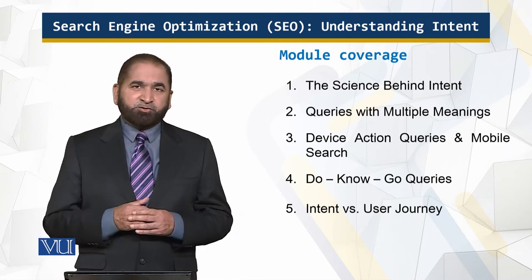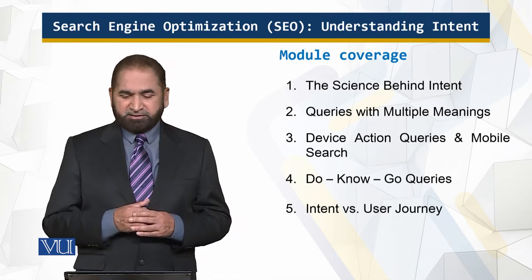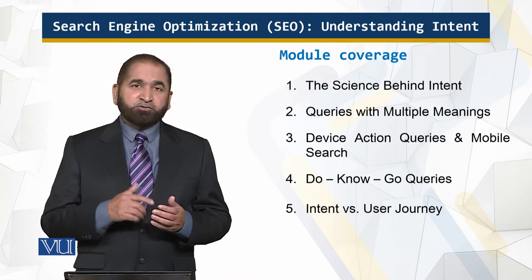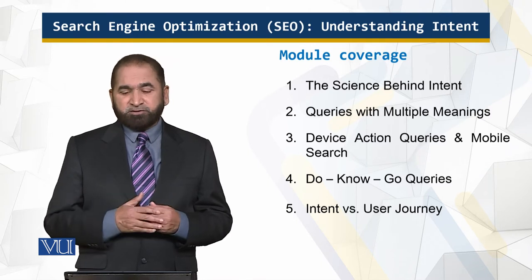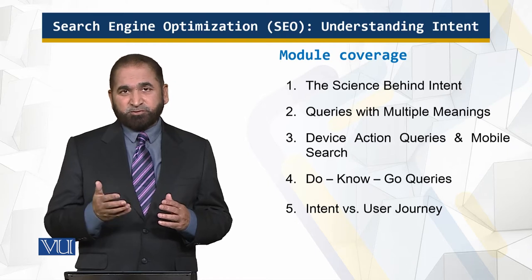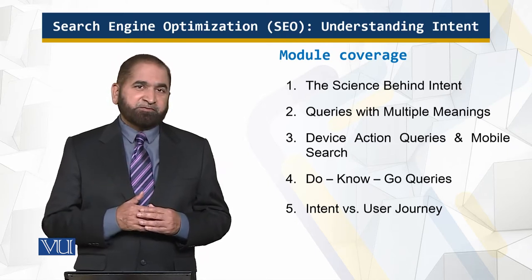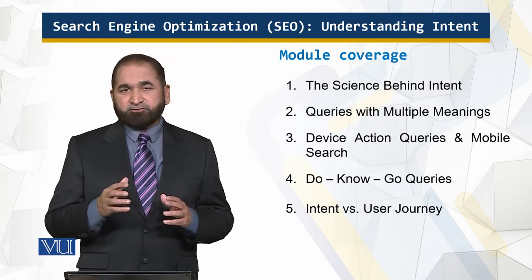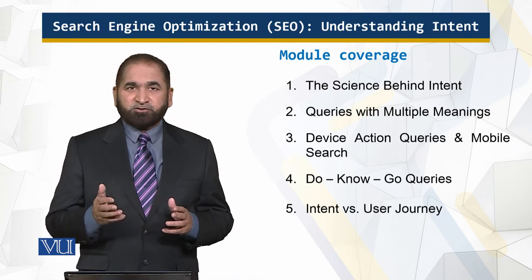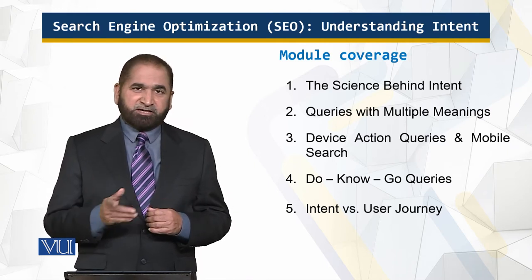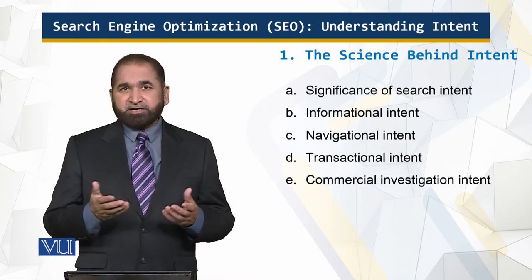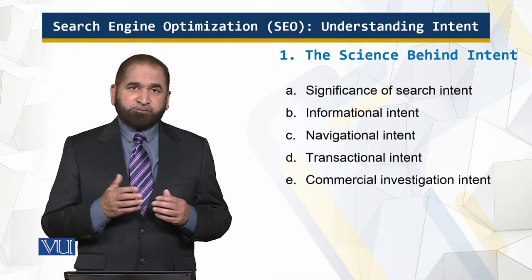This is the module coverage I'll be addressing: the science behind the intent, queries with multiple meanings, the Do/Know/Go type of queries, and the internet journey — what it used to be and how it is now different. In the previous module I talked about the funnel journey, but that journey has changed like a crazy straw, and I'll talk about it towards the end of this module.